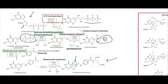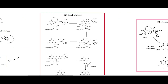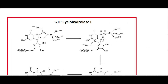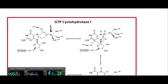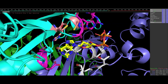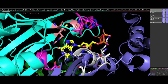Now I'll go through some of the more interesting reactions in more detail. GTP cyclohydrolase 1 is probably the most complicated one. We have the GTP in the active site where there is a zinc ion bound by a histidine and two cysteines.